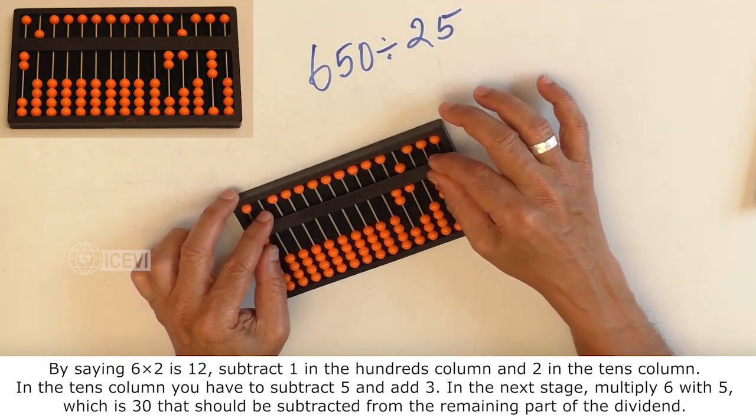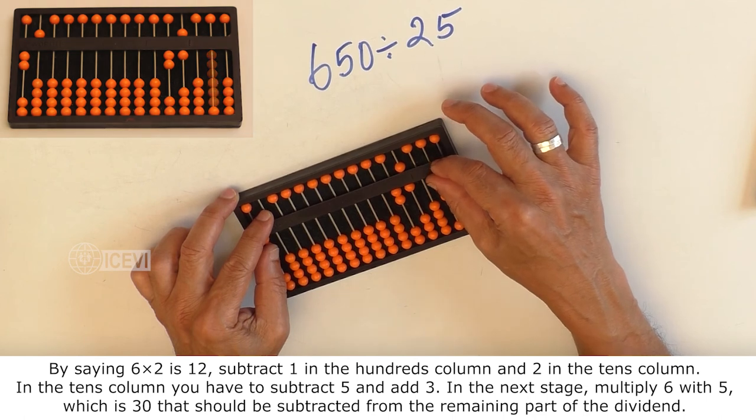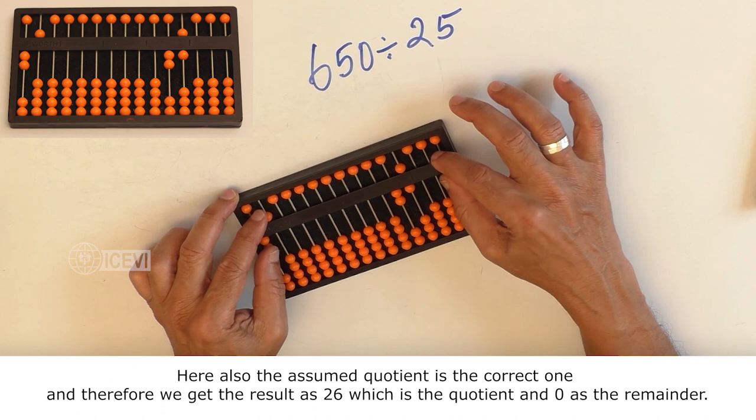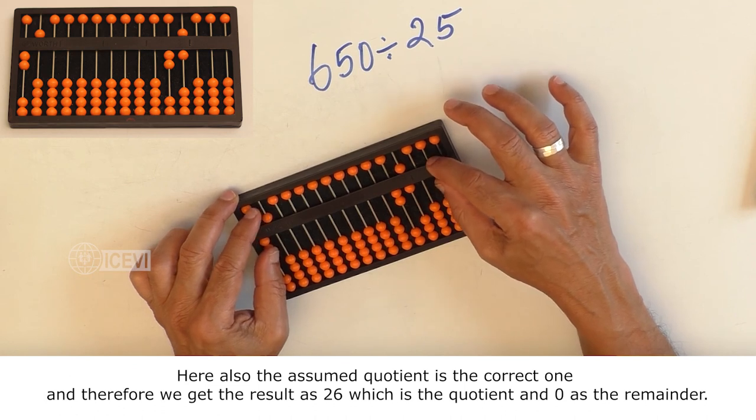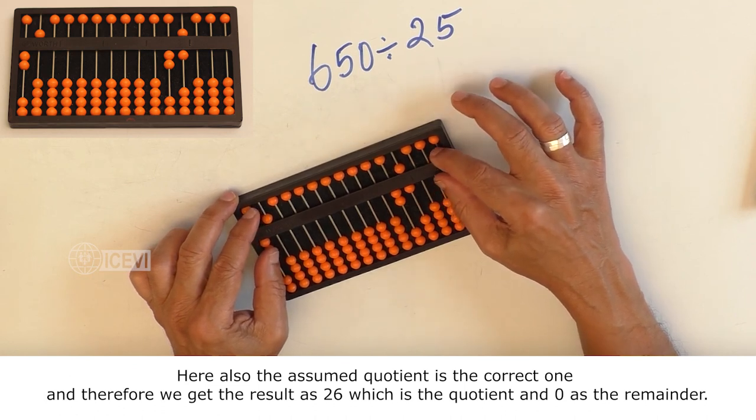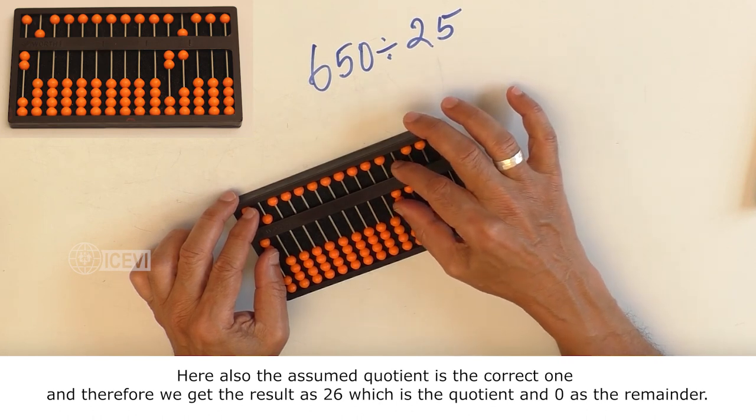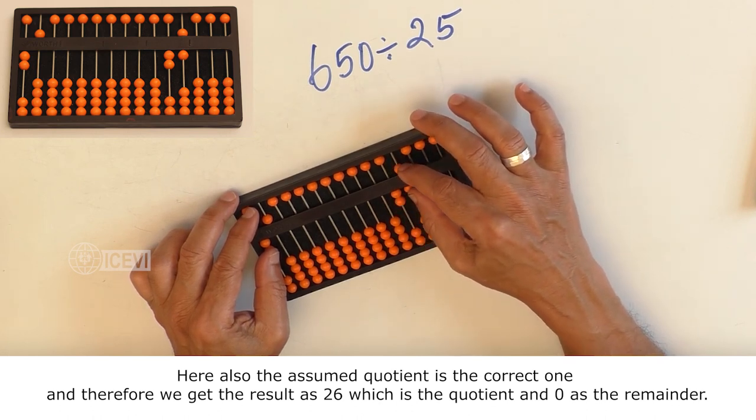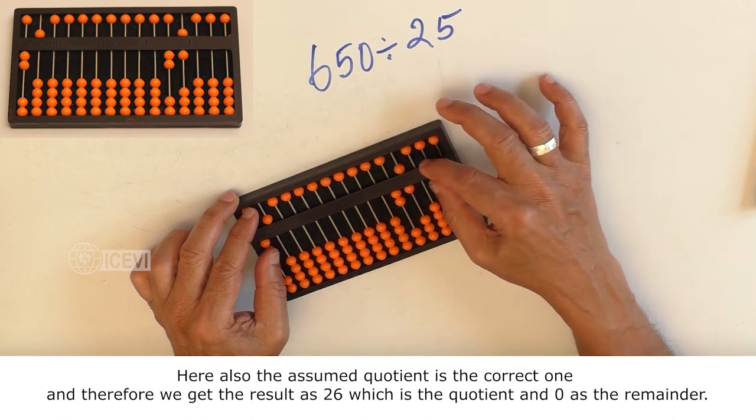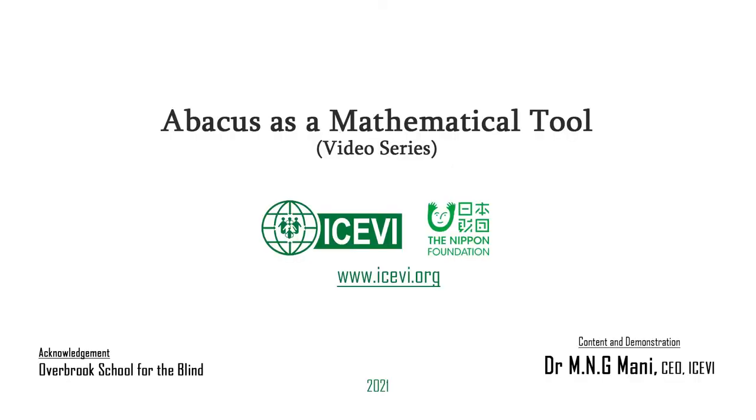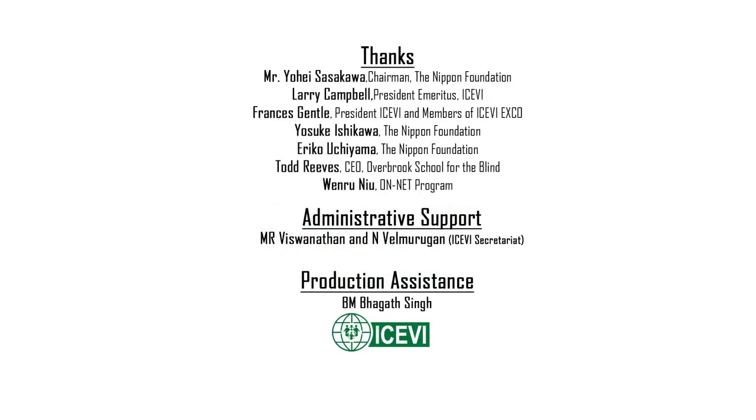That should be subtracted from the remaining part of the dividend. Here also, the assumed quotient is the correct one and therefore, we get the result as 26 which is the quotient and 0 as the remainder.